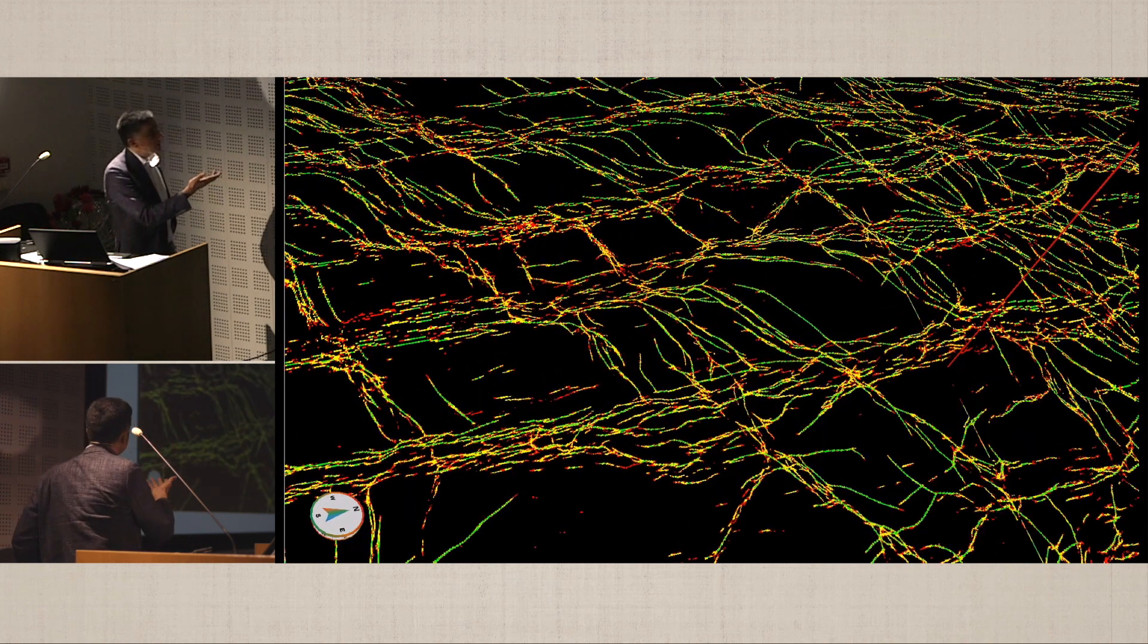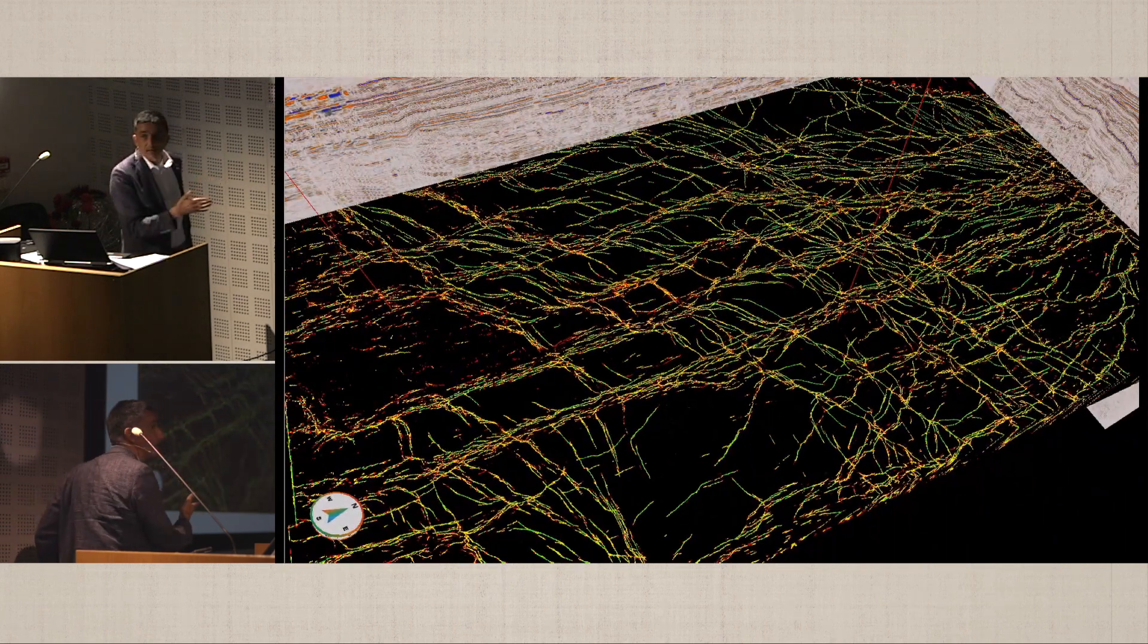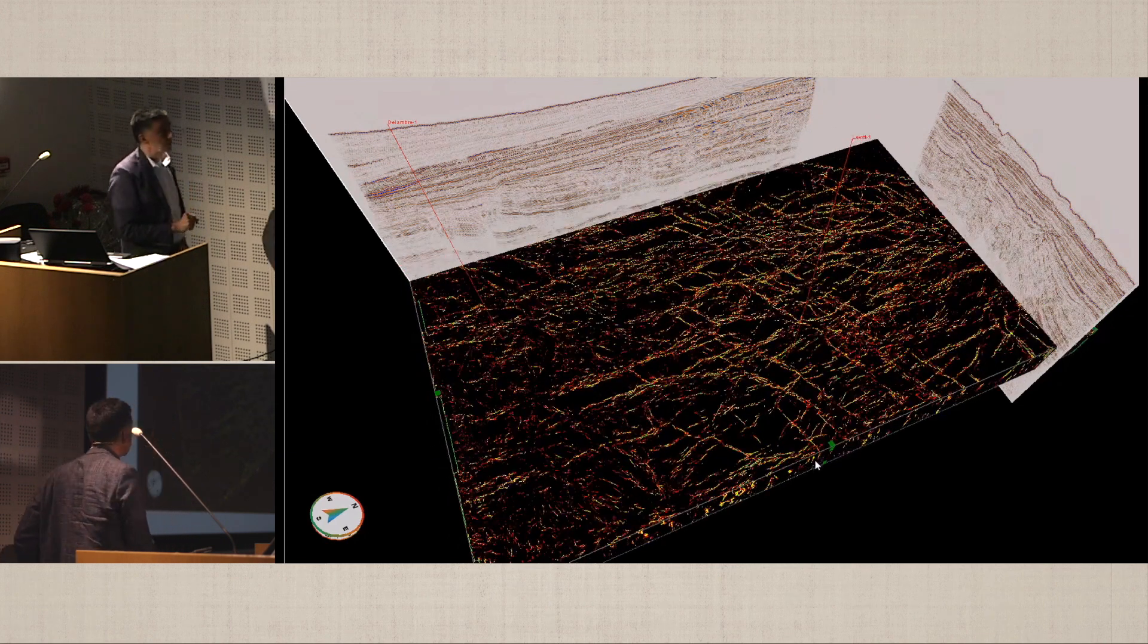What we see here is the fault network that was extracted in 12 hours. Coloring-wise, where you see reds, that's low probability. Where you see greens, that's the top five percent - very sure that there's a fault there.